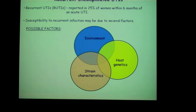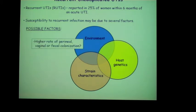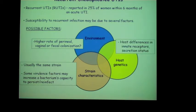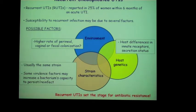Before leaving uncomplicated UTIs, I want to mention recurrent uncomplicated UTIs, which plague many women — about 25% of women with UTIs have them again and again. It seems to be a combination of environmental, strain, and host genetic factors. Women with recurrent UTIs have high rates of E. coli colonizing their vagina and intestine. Usually it's the same strain, suggesting some strains persist or are better at reinfecting the host. Host genetics are also implicated, with non-secretors at higher risk. Clinically, recurrent UTIs are a problem because repeated antibiotic treatment can select for antibiotic-resistant strains.